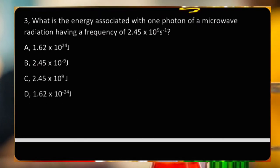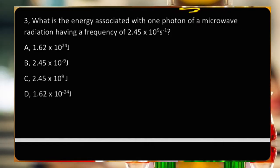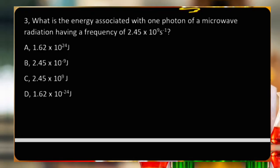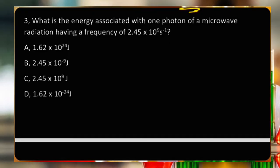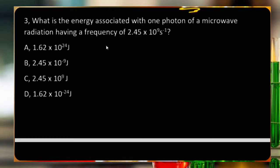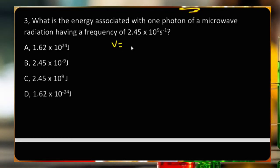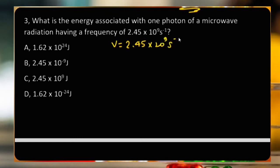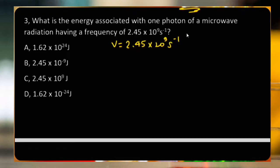What is the energy associated with one photon of microwave radiation having a frequency of 2.45×10⁹ per second? The frequency equals 2.45×10⁹ per second. We need to find the energy associated with one photon of this microwave radiation.